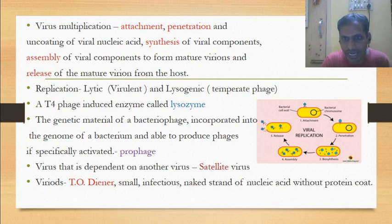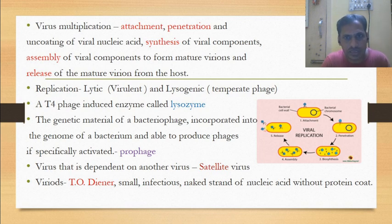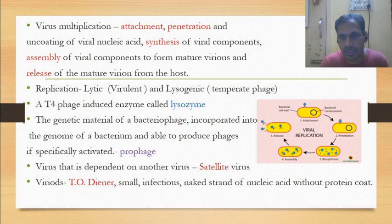Replication occurs in two ways: lytic (virulent) stage, or lysogenic (temperate phage). In T4 phage, the induced enzyme is called lysozyme. Sometimes, the genetic material of a bacteriophage incorporates into the genome of the bacterium — the ability to produce phage in this state is called a prophage.